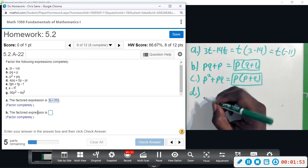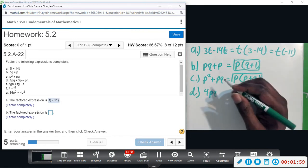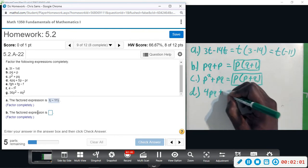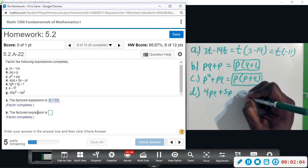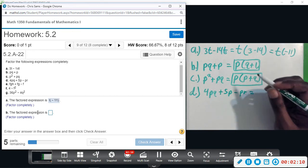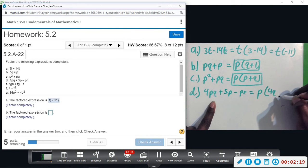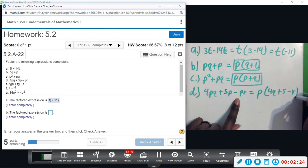Part d: we have 4pq plus 5p minus pr. Alright, so all three terms have a p. Pulling out the p would leave us with 4q, it will leave us with a 5 in the middle, and a minus r at the back.